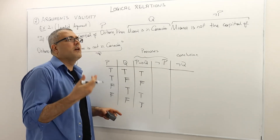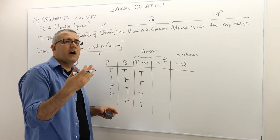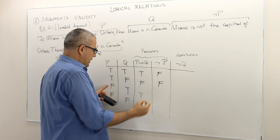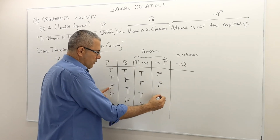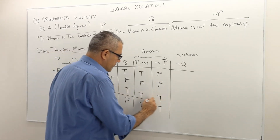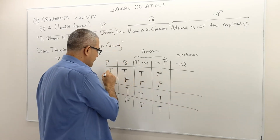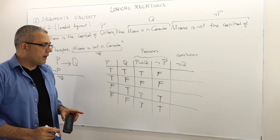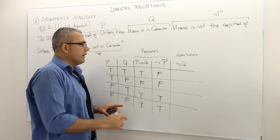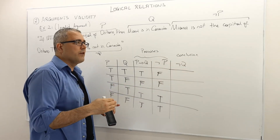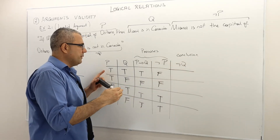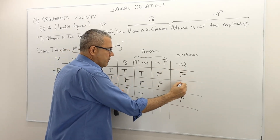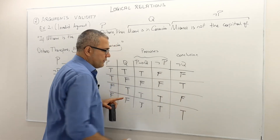What about the truth value of not P? The truth value of not P is the opposite of P — if P is true, then not P is false; if P is false, then not P is true. Let me draw lines so we know line by line what corresponds to what. Finally, the conclusion not Q: its truth value is also the opposite of Q — whenever Q is true, not Q is false; whenever Q is false, not Q is true.